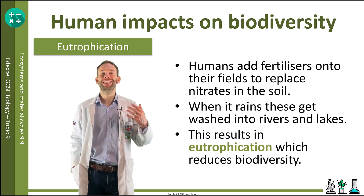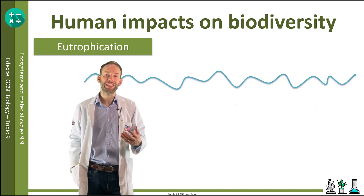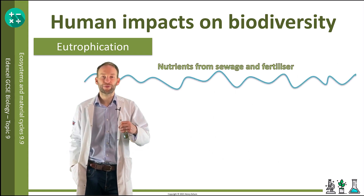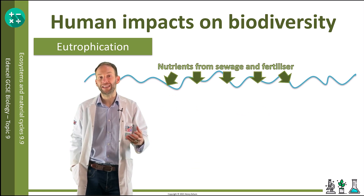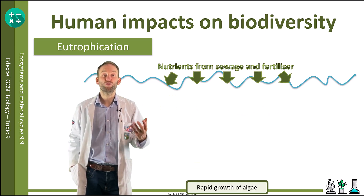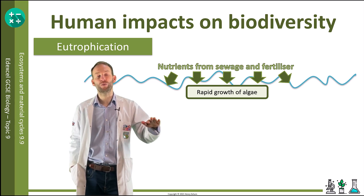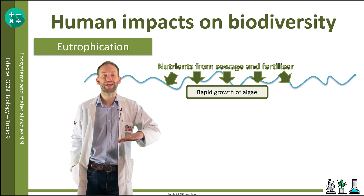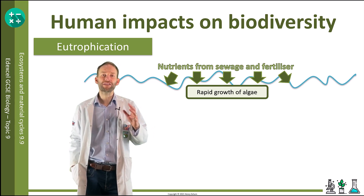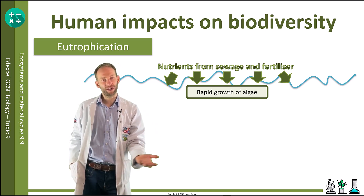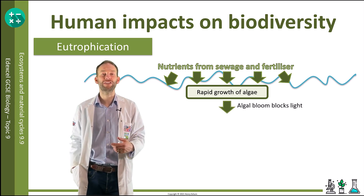What happens is these nutrients enter rivers, streams, and lakes, providing a huge amount of minerals to algae, which then grow rapidly. This creates what's called an algal bloom, which blocks out all the light in that system. Because of that, all the plants underneath die — they have no light and can't photosynthesize.